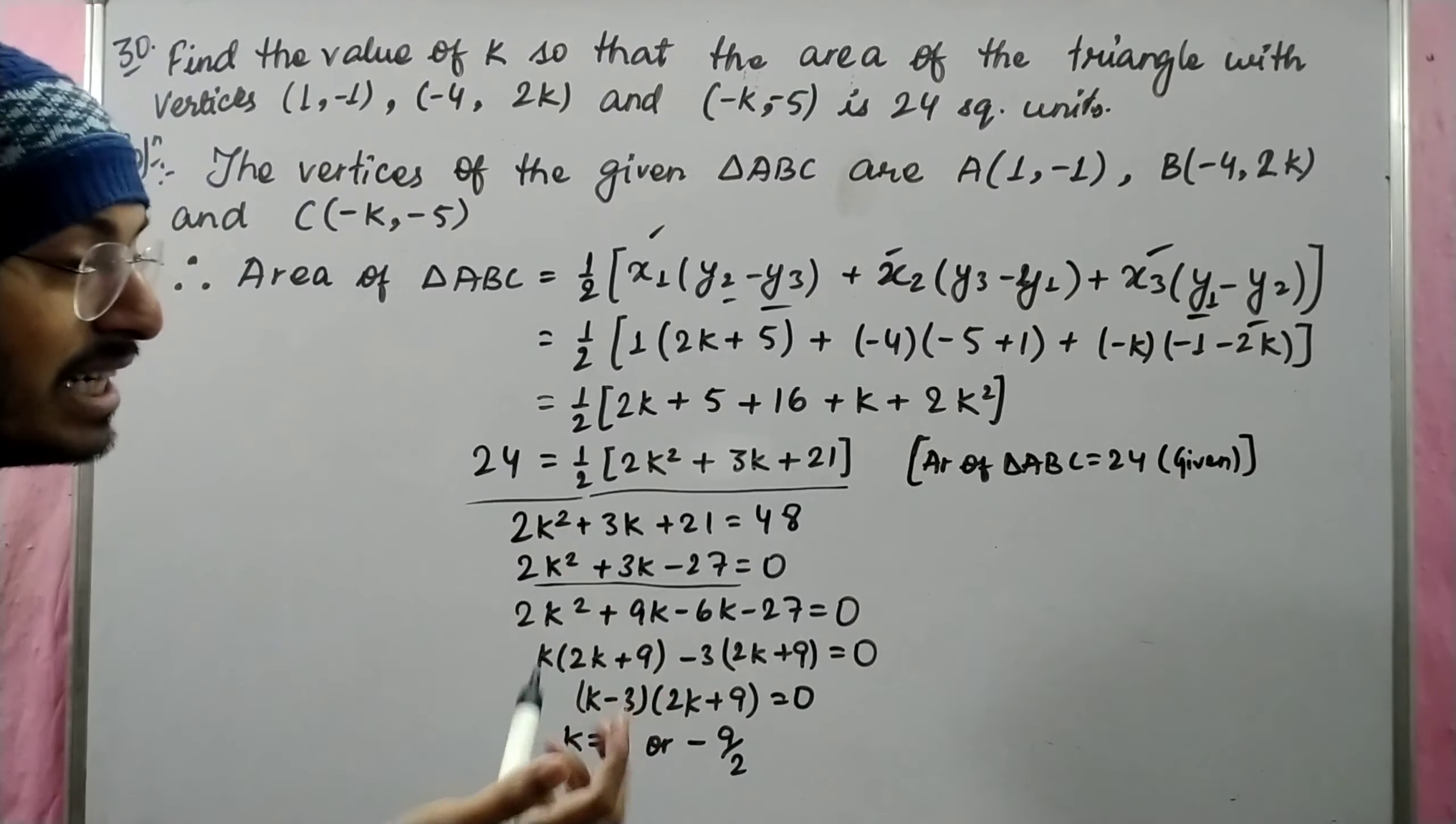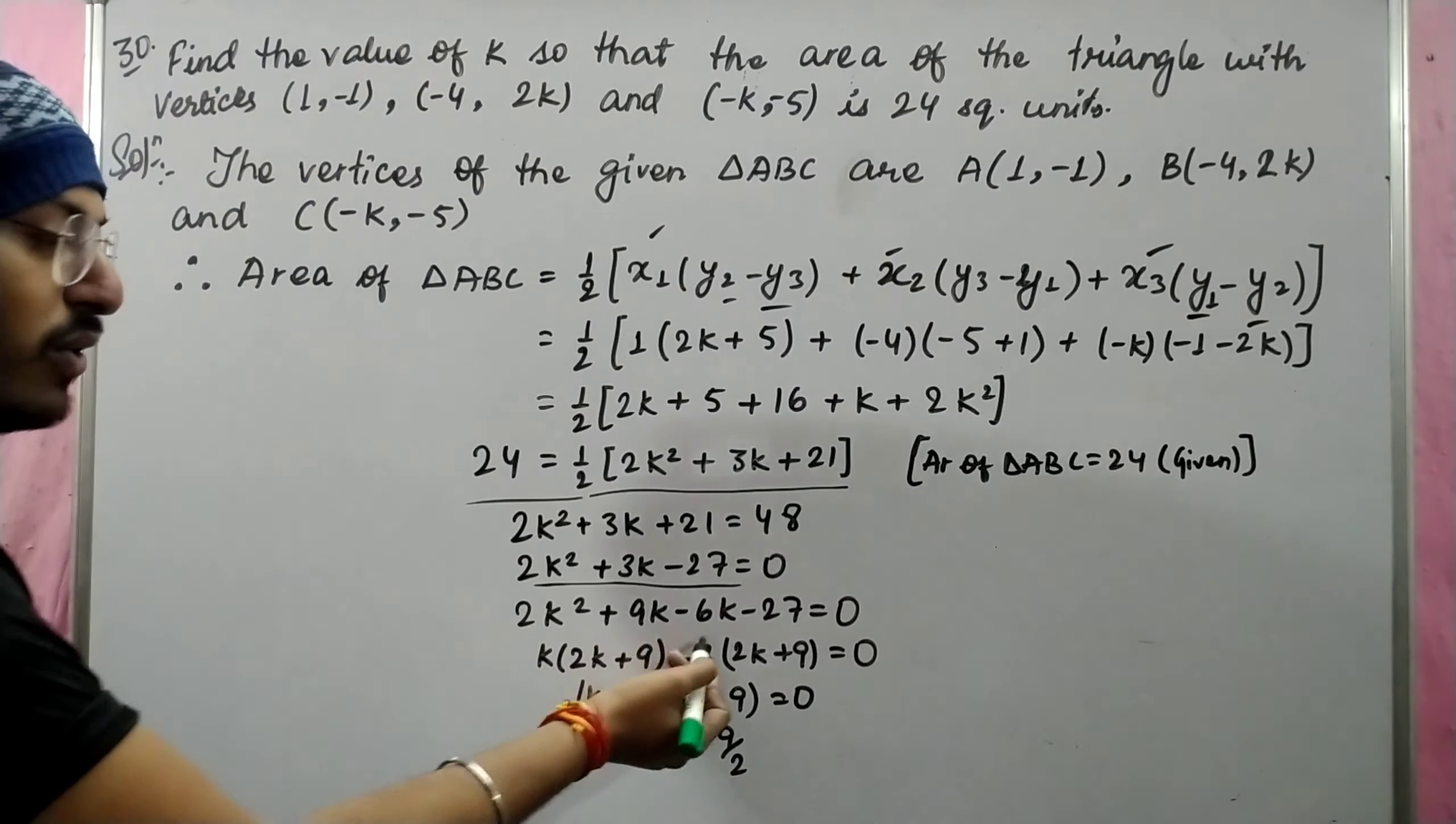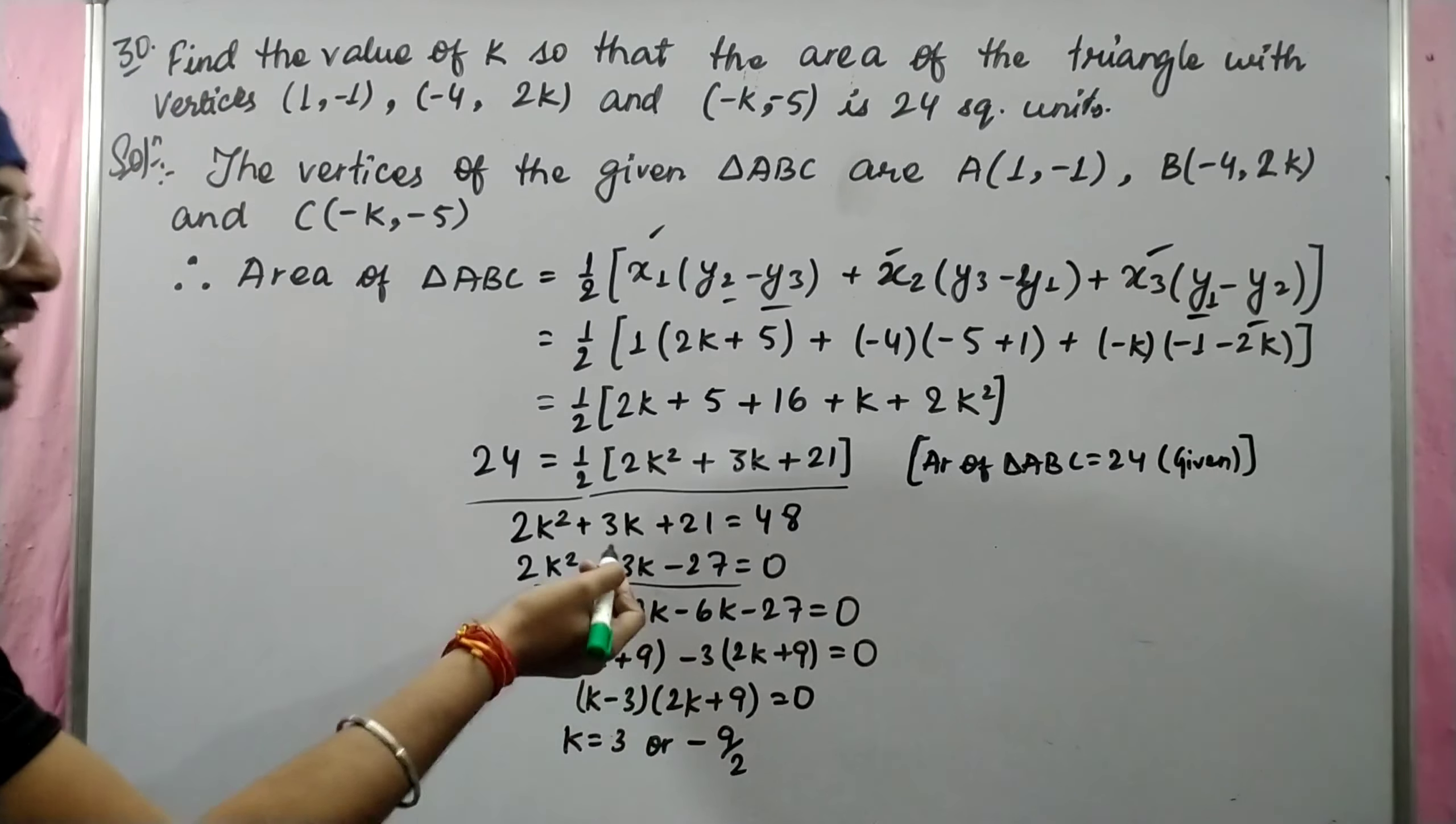You have to find multiples whose product is 27 × 2. So 9 and 6. Plus 9 minus 6 gives you plus 3.